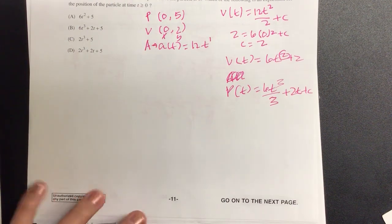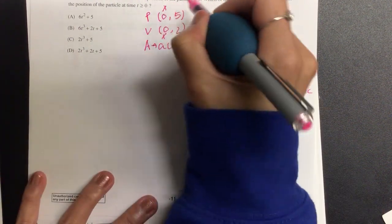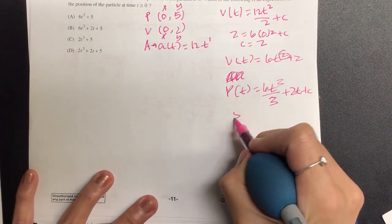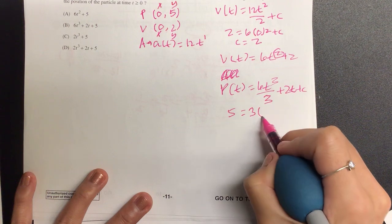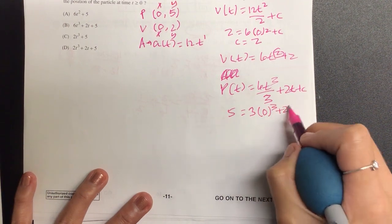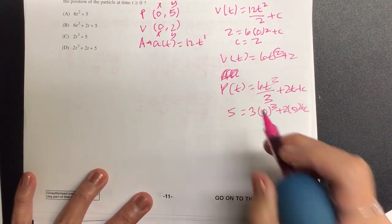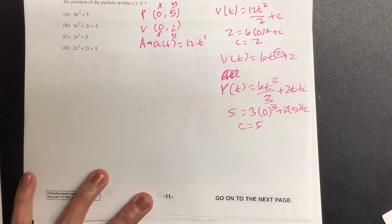And now let's plug in our p is equal to when x equals zero and y equals five. So we have five is equal to, I'm going to go ahead and simplify this. We have three times zero cubed plus two times zero plus c. So who is our c value? C is equal to five.